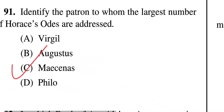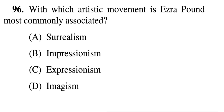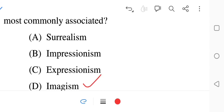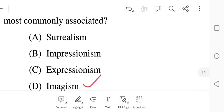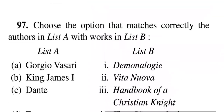Question 96: Which artistic movement is Ezra Pound most commonly associated with? Ezra Pound is an American writer you must know. The correct answer is D — Imagism. Apart from that, you must also know surrealism, impressionism, and expressionism.